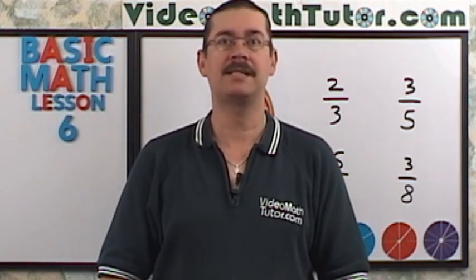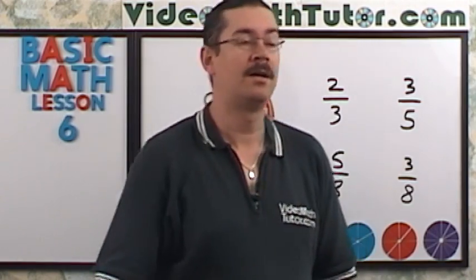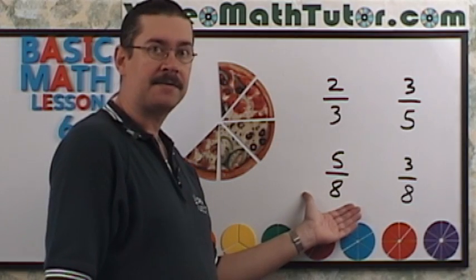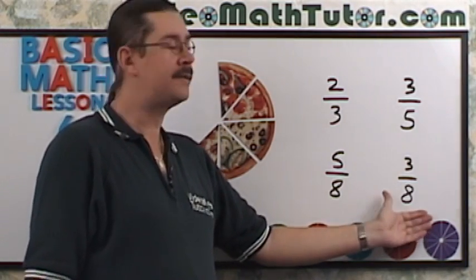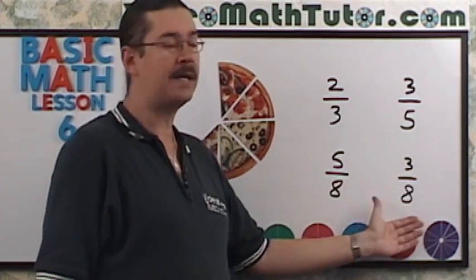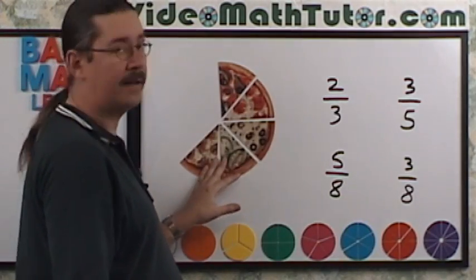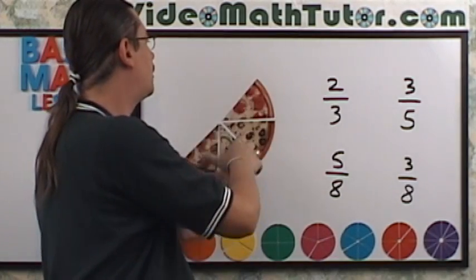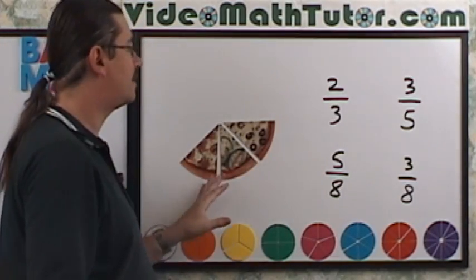Now I'd like to compare the sizes of different types of fractions. If we have something that looks like this — 5 eighths — and I want to compare that with 3 eighths, that's actually pretty easy. Obviously, 5 eighths is more than 3 eighths because visually you can see it: 5 slices out of 8 is much larger than 3 eighths.